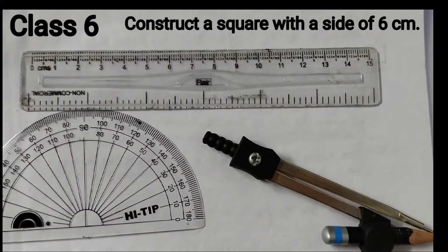Hello students, welcome back to Rosimath's class. Today we shall construct a square with a side of 6 cm. This is given on page number 195 of Ganit Prakash.